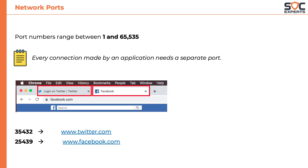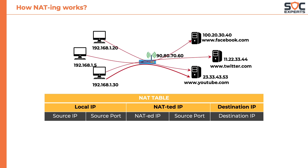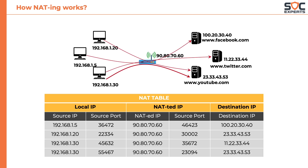Now let's see how all this fits into NATing. Consider the previous network diagram. When the individual computers make connections, the router responsible for NATing maintains something called a NAT table. The NAT table consists of private IP addresses, the source port, the NATed IP, and the source port used by the router to initiate traffic to the destination IP. When the traffic is returned, the router knows exactly which computer to send the traffic to. You may notice the third computer, 192.168.1.30, has initiated two connections — one for Twitter and another for YouTube. Traffic coming from the same computer will be individually identified by the source port.